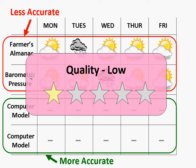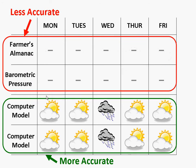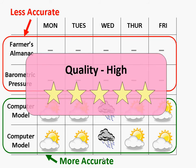In contrast, consider the scenario where forecasts use more accurate techniques, such as advanced computer models. We may similarly decide it will next rain on Wednesday; however, we are more confident about this. In this case, we would say that the quality is high because it includes forecasts from the most accurate sources.